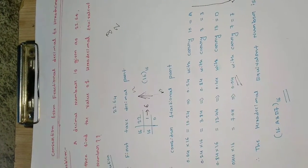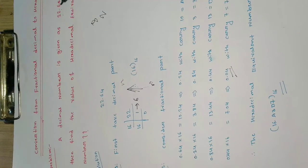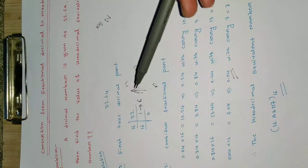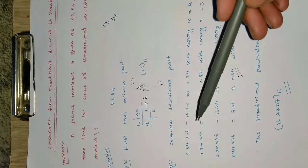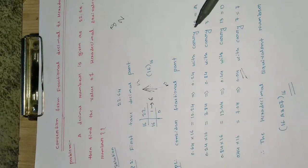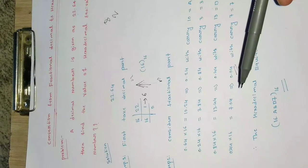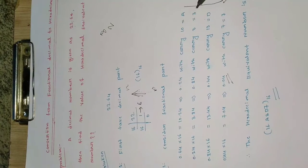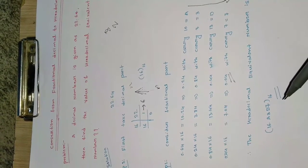Let's do a quick recap. We split the problem into two parts — left and right of the decimal point. For the left part, we divide repeatedly by 16 and write values MSB to LSB. For the right part, we multiply repeatedly by 16, extract the integer part each time, convert it to its hexadecimal digit, and continue with the remaining fractional part until the value becomes very small. Combining both gives the full hexadecimal equivalent.